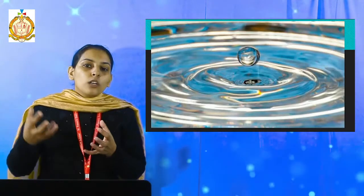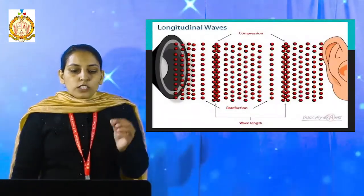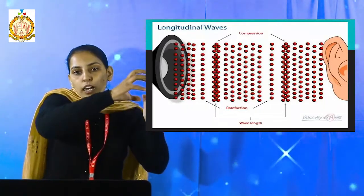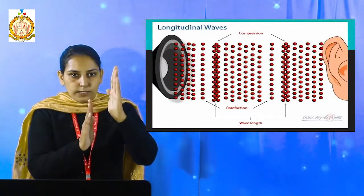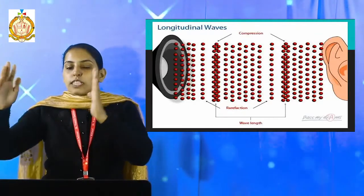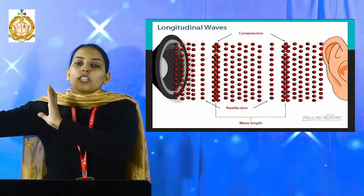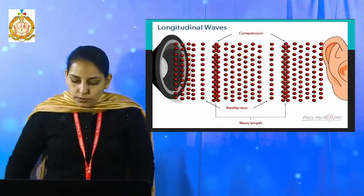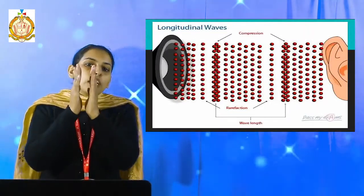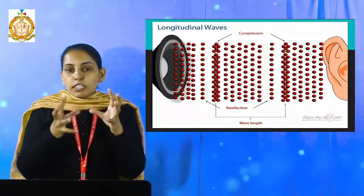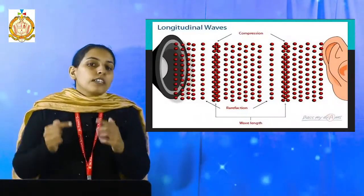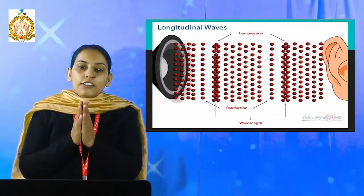Let us understand how sound comes to our ears. These layers are called longitudinal waves. For example, when sound comes from the speaker, it strikes the first layer, then the first layer strikes the second layer, then the second layer strikes the third layer. This process continues and at the last layer, it strikes the noise to our eardrum. When this process continues, at some points longitudinal waves are closer to each other and some are away. Where the points are closer, that is called compression. And where the lines are away from each other, that is called rarefaction.